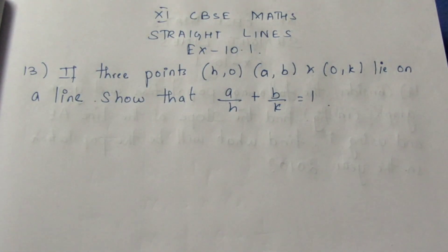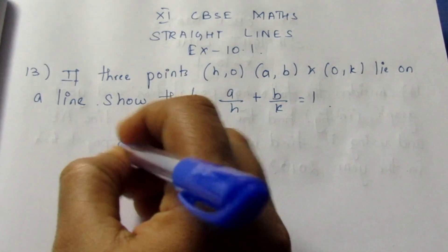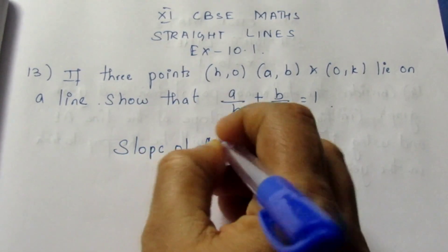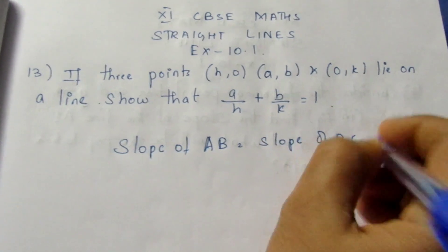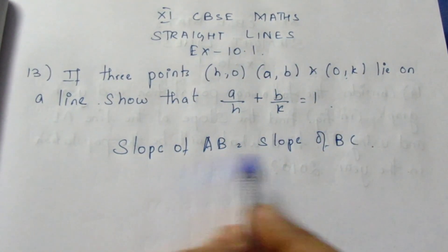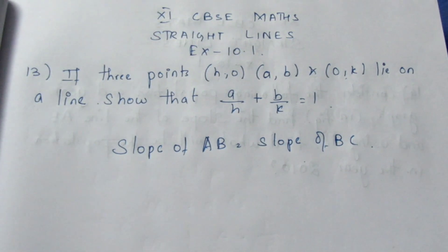Here they are given the three points lie on a line. That means the three points are collinear. If three points are collinear, we can directly say that slope of AB equal to slope of BC. That is, if this is A, B and C, we can say that slope of AB equal to slope of BC.